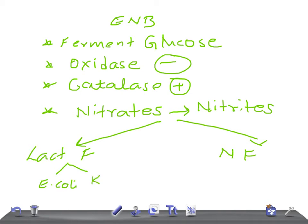Under lactose fermenters, the two important bacteria are E. coli and Klebsiella pneumoniae. E. coli is really very important for USMLE examinations because we get many diseases from this bacteria, like traveler's diarrhea, hemorrhagic colitis, and hemolytic uremic syndrome. It produces different toxins such as ETEC, EIEC, and EHEC. E. coli is also one of the most important causes of UTI.